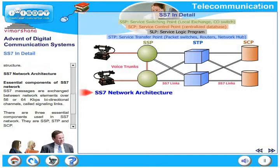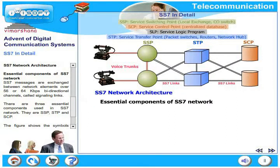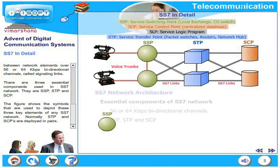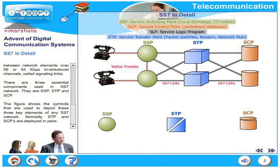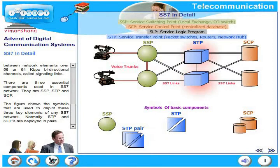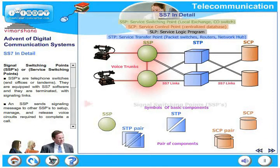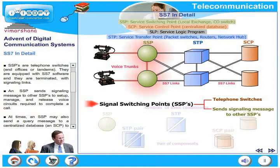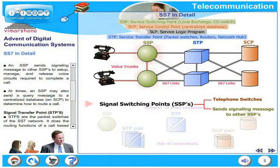SS7 messages are exchanged between network elements over 56 or 64 kilobits per second bidirectional channels called signaling links. There are three essential components used in the SS7 network: SSP, STP, and SCP. The figure shows the symbols used to depict these three key elements. Normally, STPs and SCPs are deployed in pairs. SSPs are telephone switches, also known as end offices or tandem offices. They are equipped with SS7 software and terminated with signaling links. An SSP sends signaling messages to other SSPs to set up, manage, and release voice circuits required to complete a call.